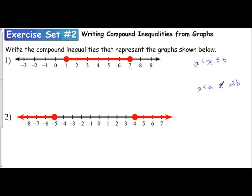The first step is to determine, is it an and or is it an or compound inequality? If I look at number one, I have my boundaries of one and seven, and my solution is between them. This tells me that problem one is an and compound inequality.